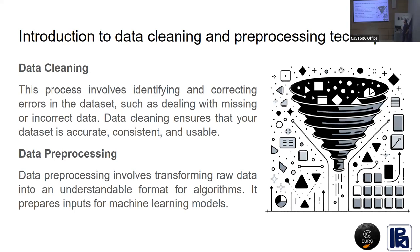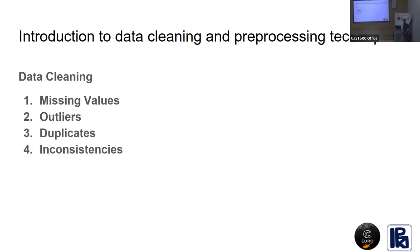The talk is split into two parts. The first part is about data cleaning, which is both the process of identifying and correcting errors in your dataset, dealing with missing or incorrect data. This process ensures that your dataset is accurate, consistent, and usable. The second part is about data preprocessing, which involves transforming your data into an understandable format for algorithms and preparing inputs for machine learning models.